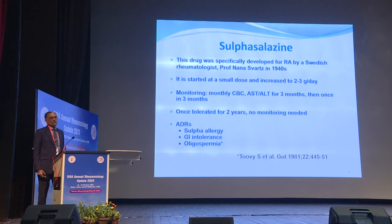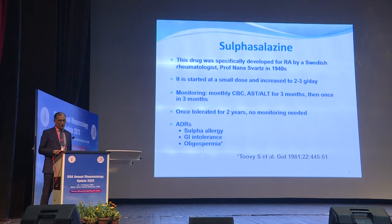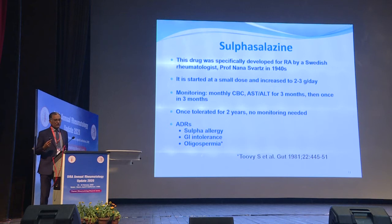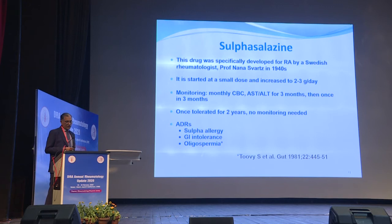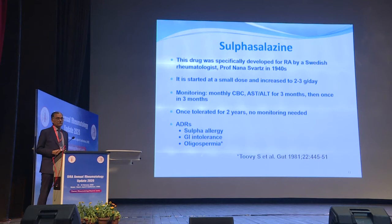Moving on to sulfasalazine — interestingly, this drug was specifically developed for rheumatoid arthritis by Swedish rheumatologist Professor Nana Schwartz in the 1940s. It is started at a small dose and increased to 2 to 3 grams per day. Monitoring is simple: monthly complete blood count and liver enzymes for three months, then once every three months. Once tolerated for two years, no further blood monitoring is needed. Since it is a sulfa drug, do not prescribe it to someone with a previous history of sulfa allergy, and withdraw it at the earliest sign of allergic reaction. An important side effect is GI intolerance.